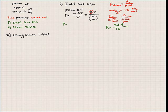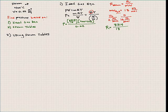So pressure equals (8314 / 18) × (400 + 273) / 0.02. Our pressure in this case is 15,542 kilopascals. That's our final answer using the ideal gas equation.